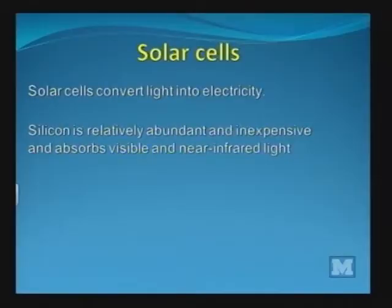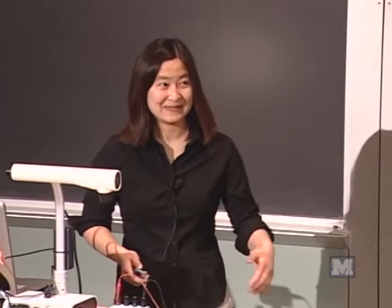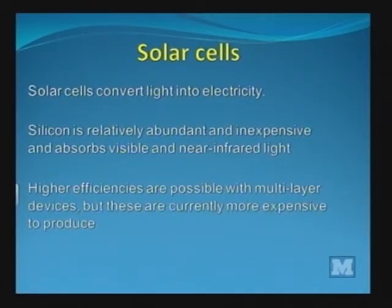Solar cells convert light into electricity. Since silicon is relatively abundant and inexpensive and absorbs visible and near-infrared light — silicon oxide is basically glass or sand, so silicon is almost everywhere on Earth's surface — it's relatively easy to find and refine. You could potentially get higher efficiencies with devices using other semiconductors, but those are more expensive currently to produce.